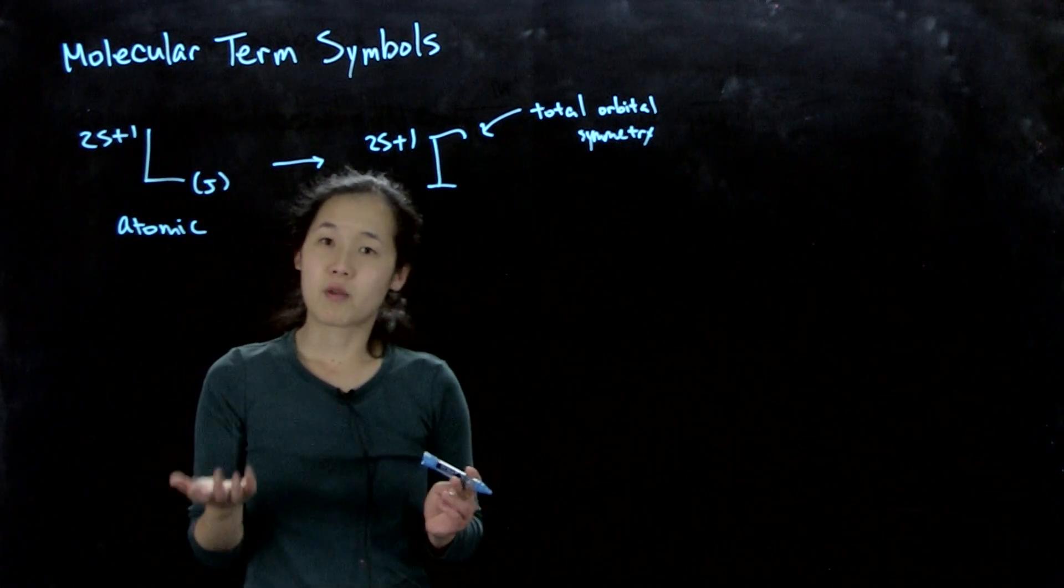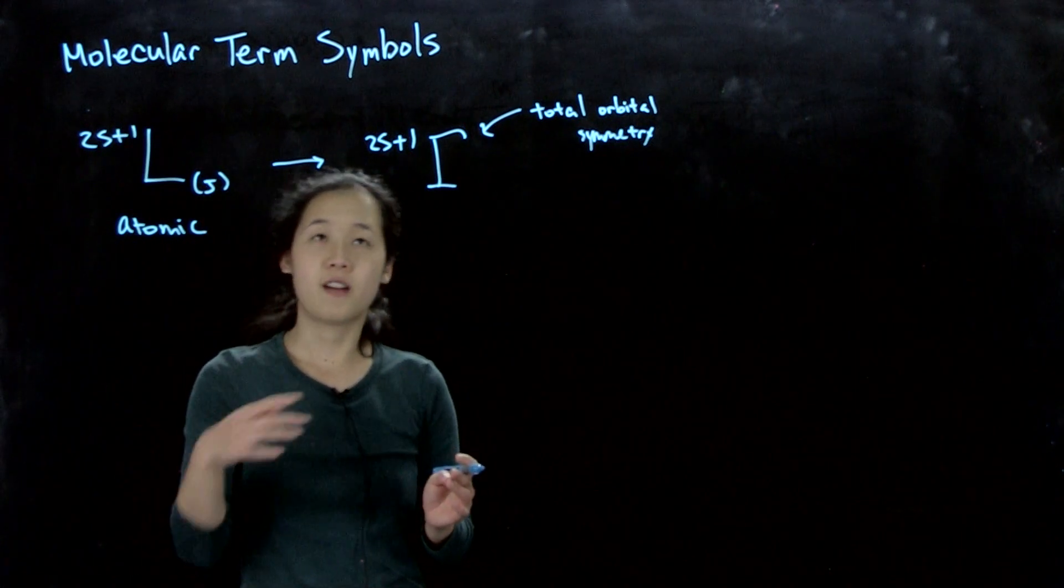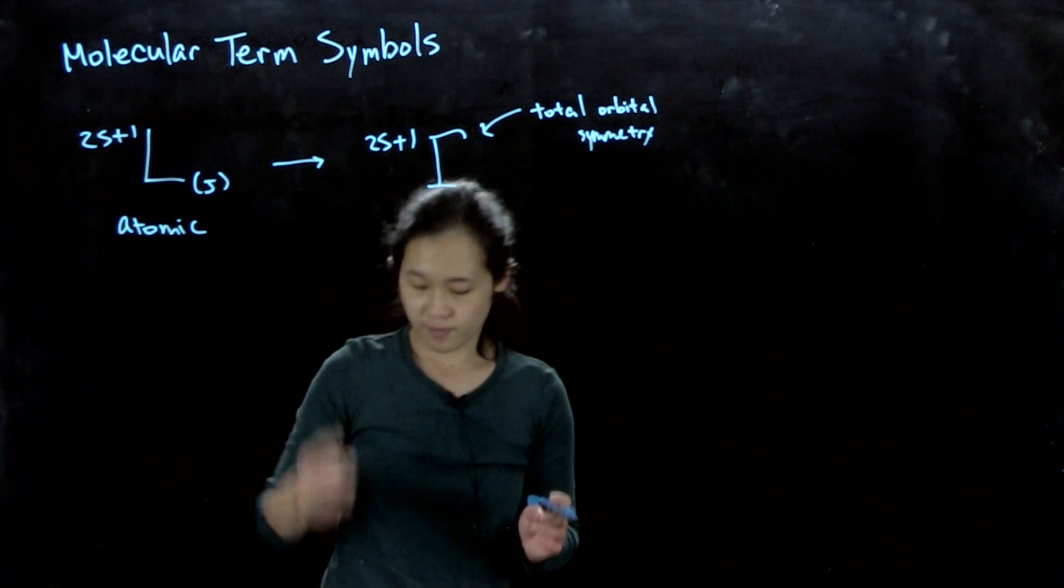It's s, the number of unpaired electrons, times 1 half, and then to get the multiplicity, it's 2s plus 1.